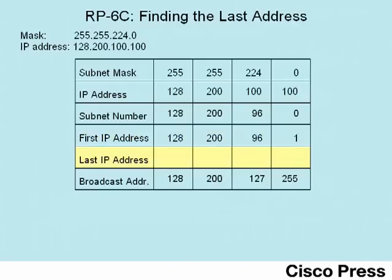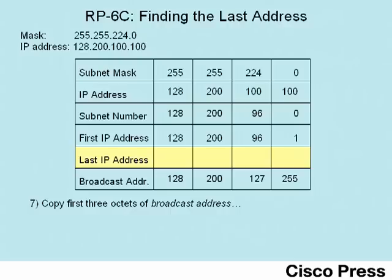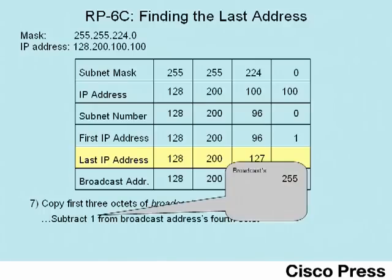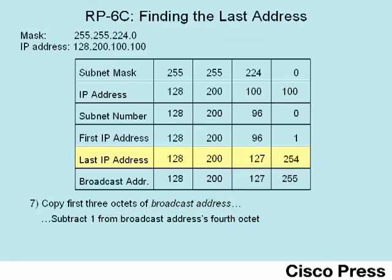Step 7 finds the last valid IP address based on the subnet broadcast address. Similar to step 6, copy three octets — but in this case copy the first three octets from the subnet broadcast address. Then subtract 1 from the broadcast address's fourth octet. In this case, 255 minus 1 is 254, which gives us a last valid IP address of 128.200.127.254.